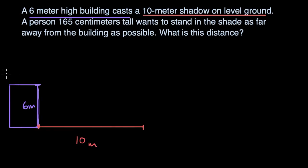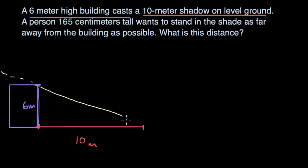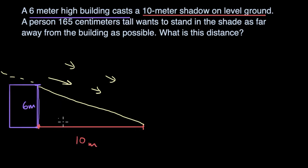Let me draw the light. So the light is coming in and the shadow casts — connect those dots. One way to think about it is all the light is coming up here; it's not being blocked by the building. What we're thinking about is a person that's 165 centimeters tall and how far can they walk. They can walk until their head starts to poke through and get some of that light. So 165 centimeters — that's 1.65 meters.